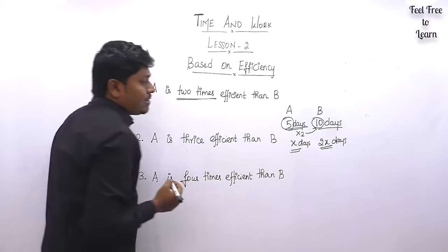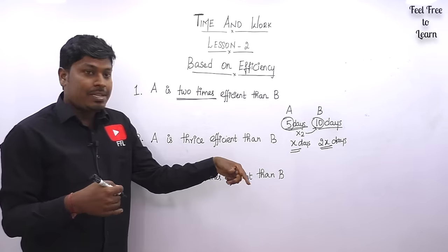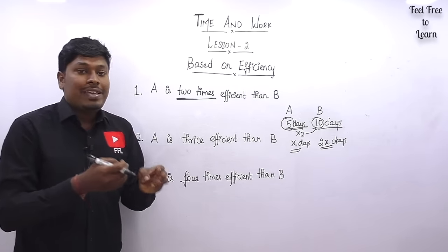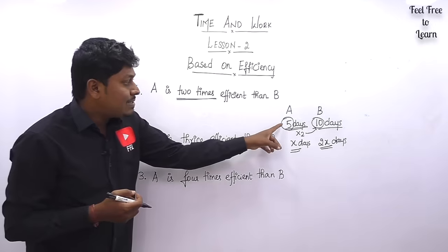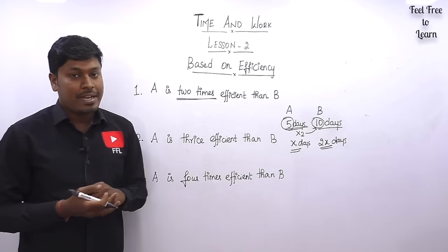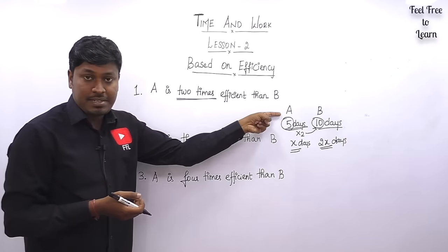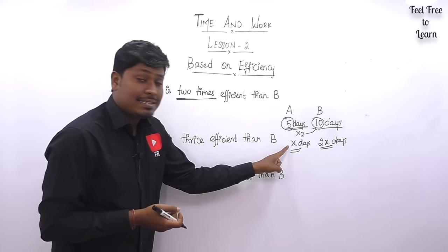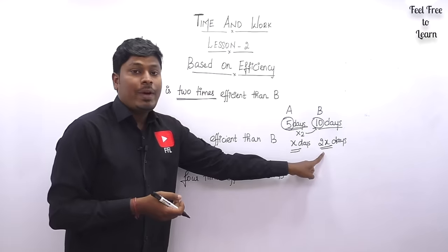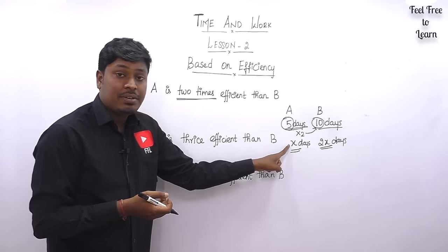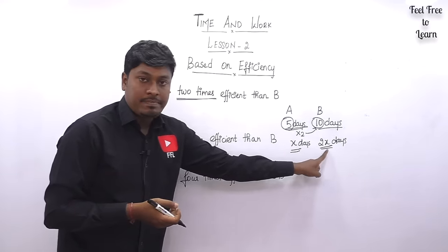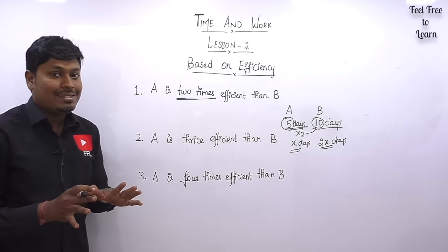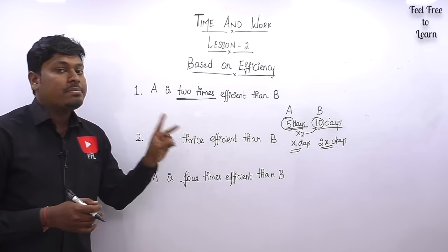In case number one we assumed B is 10 days. Because A is two times efficient, A completes the task in 5 days. Writing the same expression in terms of x: A completes a task in x days, B completes a task in 2x days. When you substitute x = 5, B will be 10; if x = 10, B will be 20. This confirms that A is two times efficient than B.